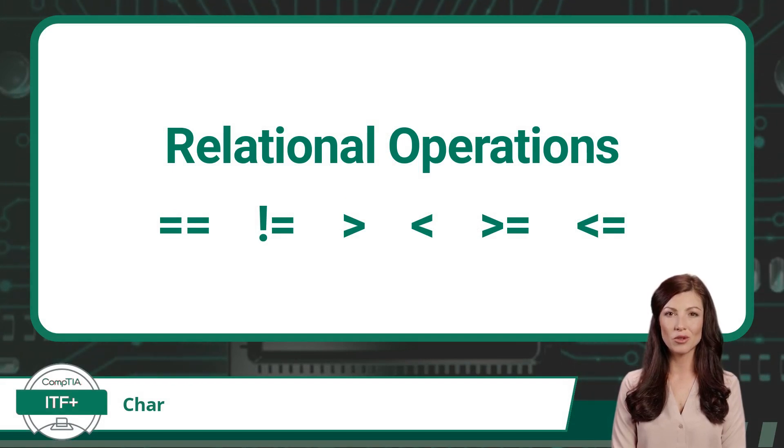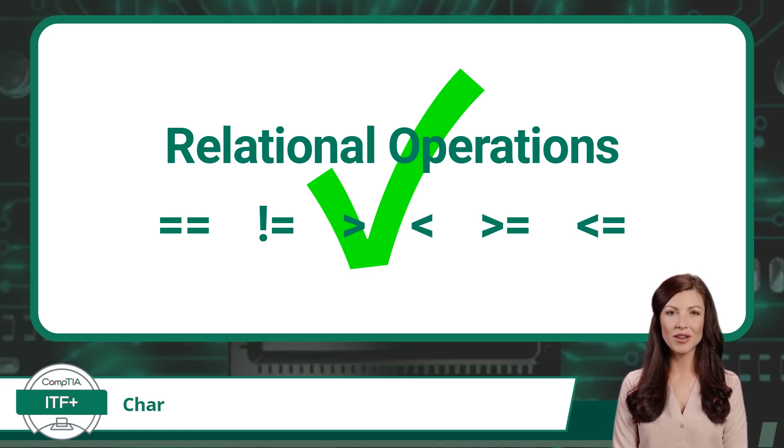Surprisingly, the char data type will support relational operations. For a comparison to take place, all char values will first be converted to their binary character code values before comparisons take place.